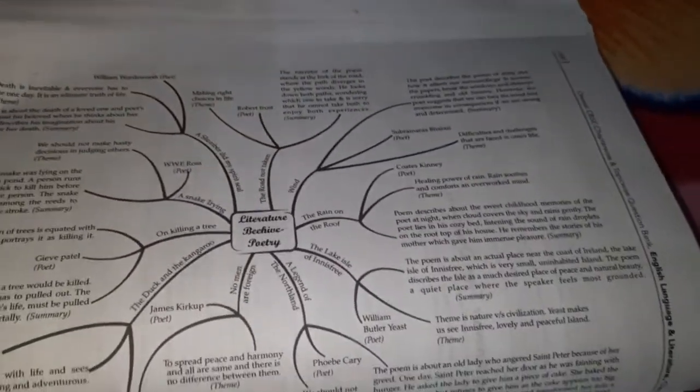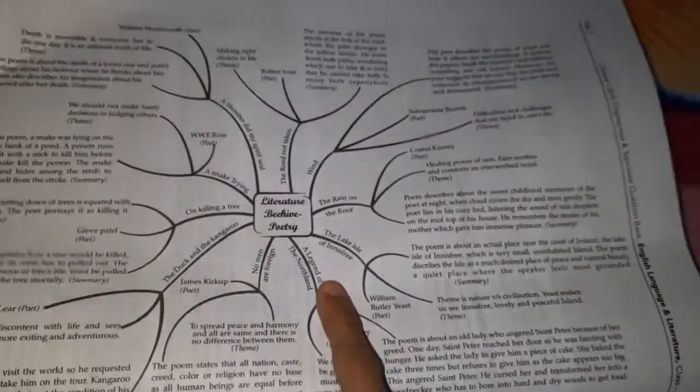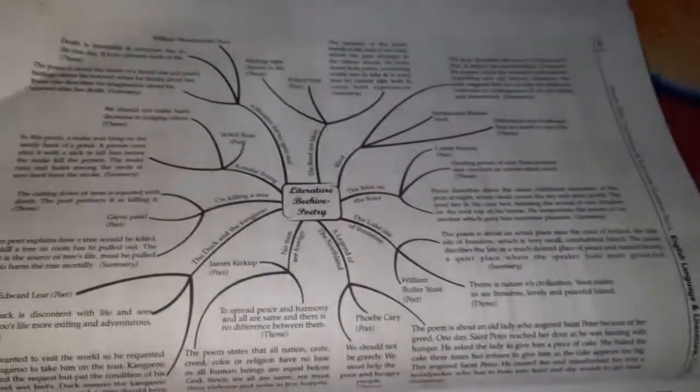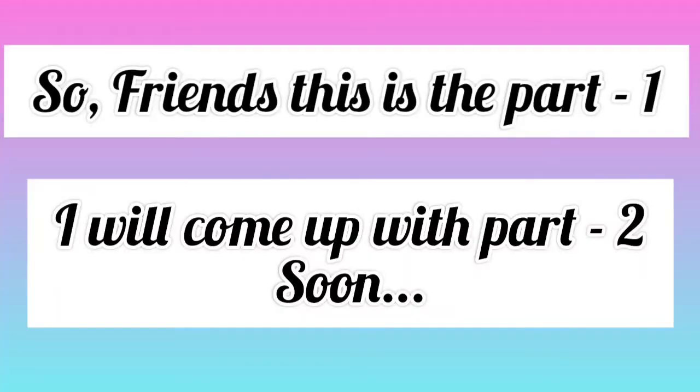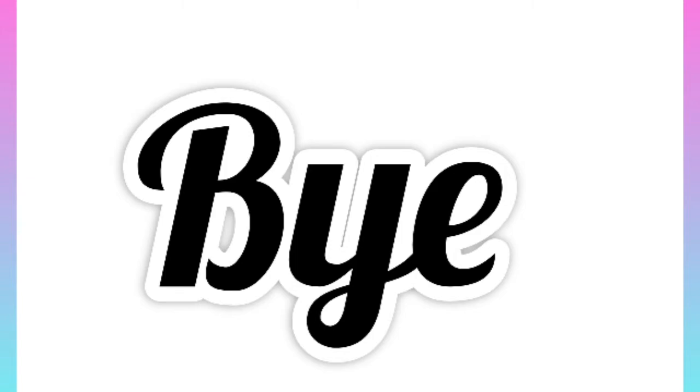You can see many chapters covered here — Iswaran the Storyteller, Packing (which chapter was packing?), Reach for the Top — Santosh Yadav, and Bruno. Next is Beehive poetry, and the first poem is The Road Not Taken. We first discuss its MCQs.